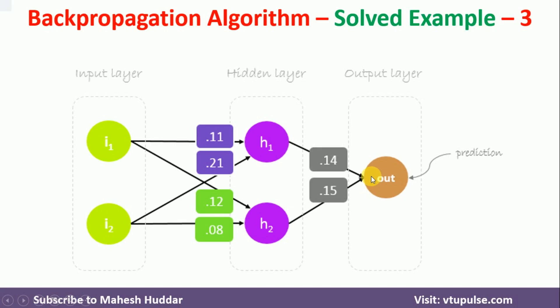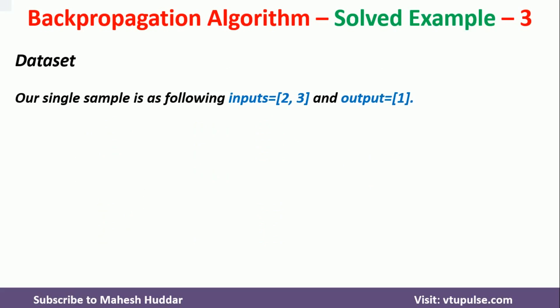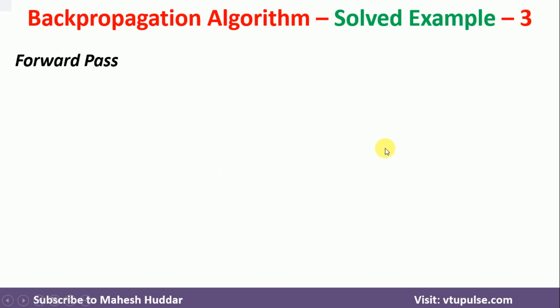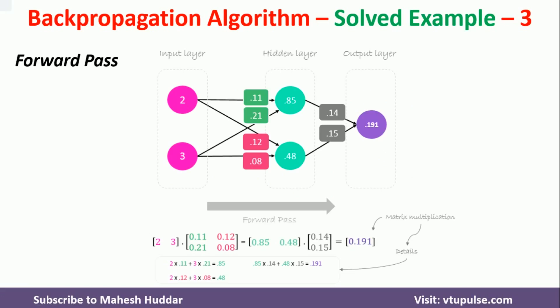Now we need to train our model, that is the neural network. For that, we need some input. In this case, the input is 2 and 3, that is I1 is 2 and I2 is equal to 3, and the actual output is 1. Given this input, what we do is perform a forward pass — we move this particular input from the input layer to the output layer so that we can get the output.